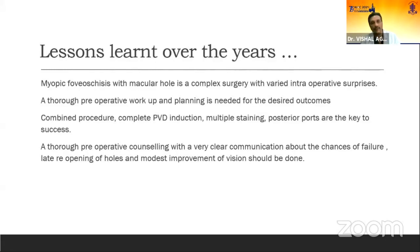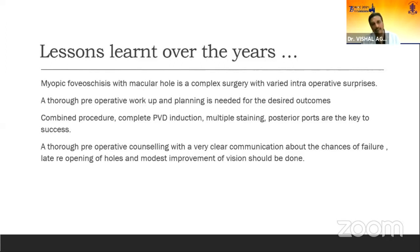To conclude, myopic foveoschisis with macular hole is a complex surgery with varied intraoperative surprises. The technique I described is very useful. Without macular hole, you try to avoid the fovea because you can de-roof the thin retina — you do a fovea-sparing ILM peeling. Of course, thorough preoperative counseling with very clear communication to the patient about the chance of failure, late reopening of the fovea, and only a modest improvement in vision even when everything goes right should always be done. Thank you.